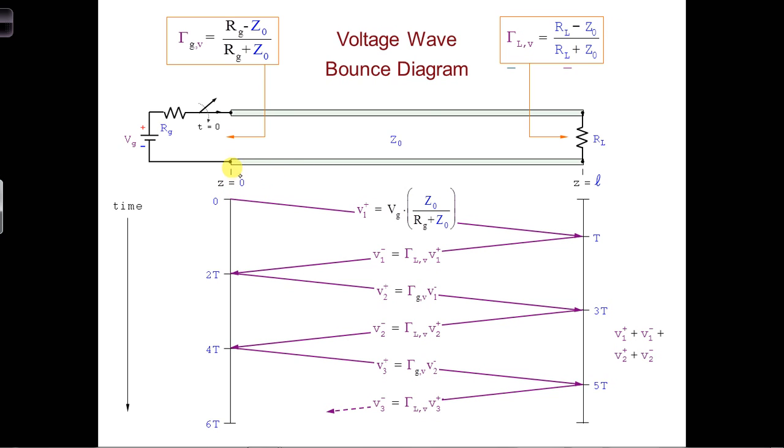For example, if we want how the voltage changes over time at Z equals 0, we can follow this line down to see how the voltage at Z equals 0 changes over time.